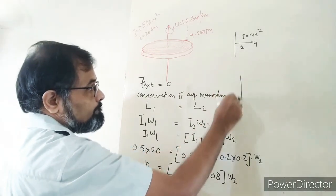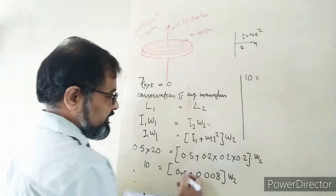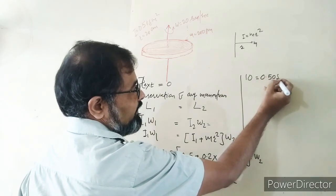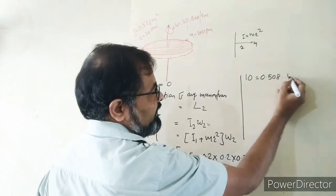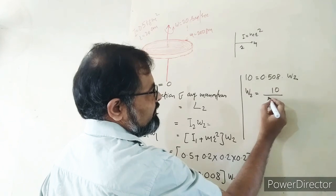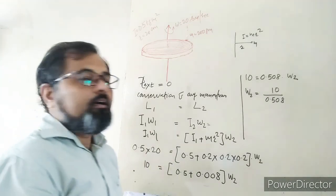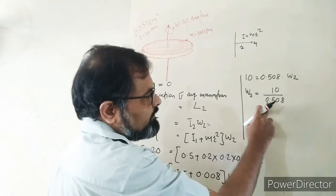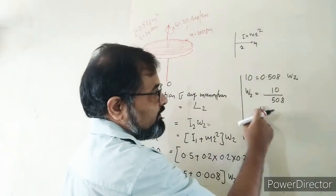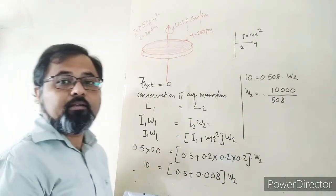10 is equal to 0.508 times ω₂. So ω₂ is 10 divided by 0.508.